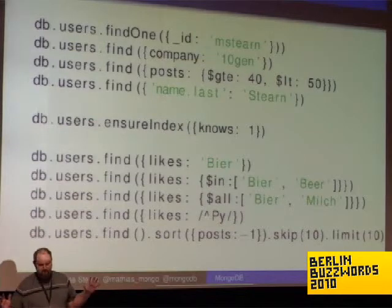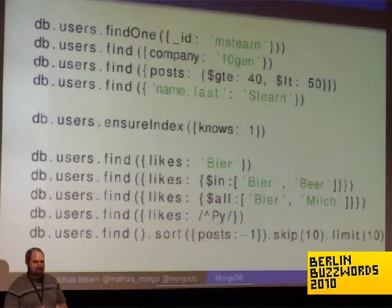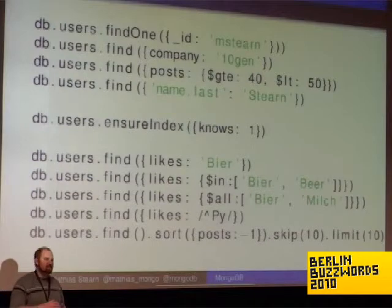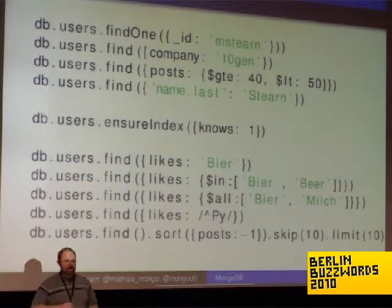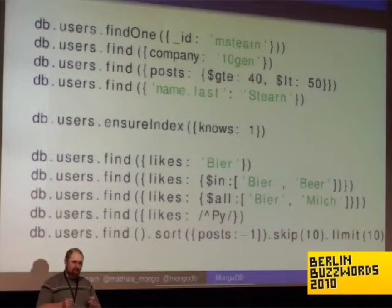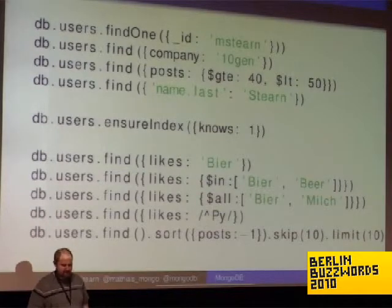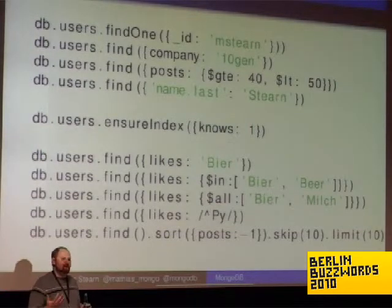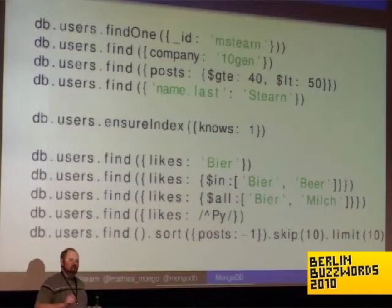We don't support transactions, but because you can have these complex objects you generally don't need them. The classic transaction case — credit one account, debit another, rollback — actually doesn't make sense because it's not the way the real world works. Banks don't actually do it that way; they do something far more complicated and resolve things at the end of the day. Because you can record complex objects, you could just store an object with creditor and debitor fields and resolve the transaction that way.